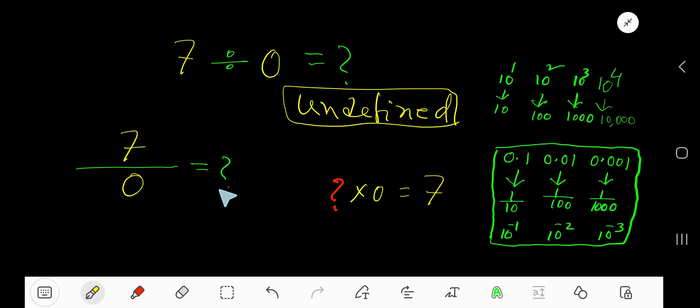And here we get the quotient. So divisor times quotient equals dividend - this is the related multiplication statement. Now think, what multiplied by 0 gives you 7? Let's try 1. 1 times 0 gives you 0.